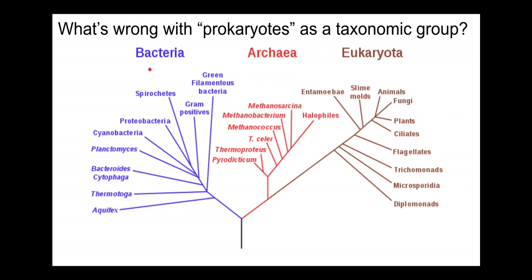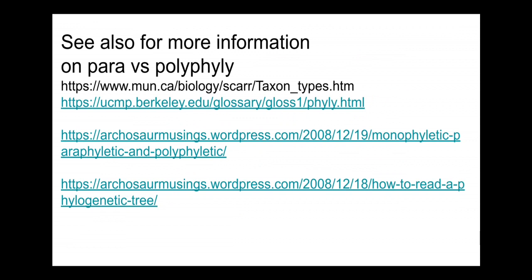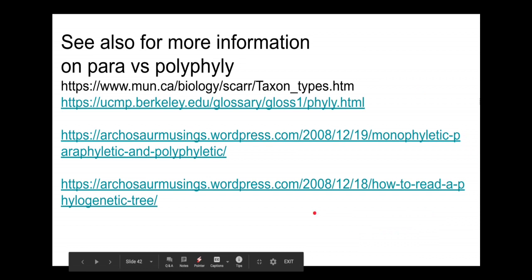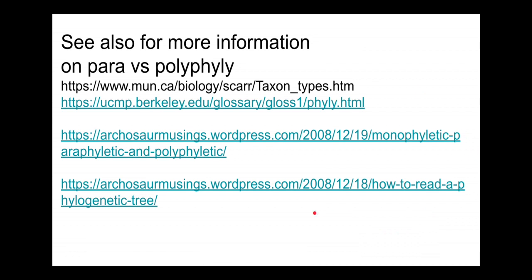Something to consider is to look at a tree of bacteria, archaea, and eukaryotes and think about why the term prokaryotic is problematic as a taxonomic group. If you want to dig in further, you can also research why the term eukaryote might be a little problematic. If you're interested in better understanding the differences between paraphyly and polyphyly, there are some resources linked in the course dashboard describing how to tell these two apart — though again, I'm more interested in just knowing when something is non-monophyletic.